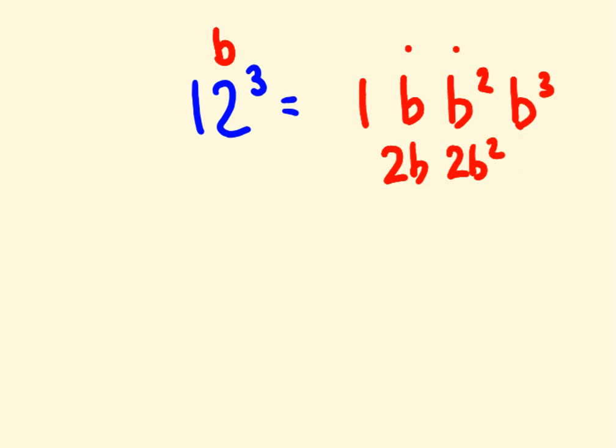All right, I'll give you an example. I'll show you how we'll do this with 12 cubed. So we write down the 1. Then we write down b which is 2. Then we write down b squared which is 4. Then we write down b cubed, 2 times 2 times 2 which is 8. Then we double this number and this number. So the double of 2 is 4 and the double of 4 is 8.